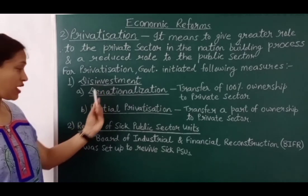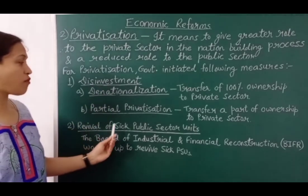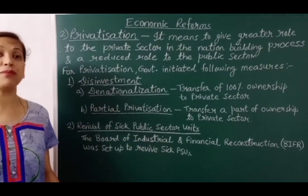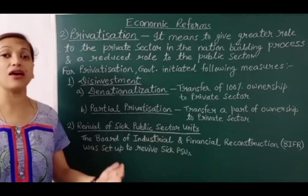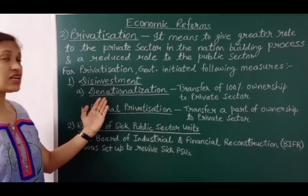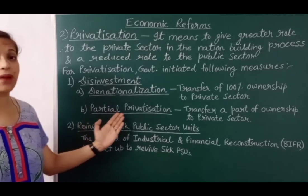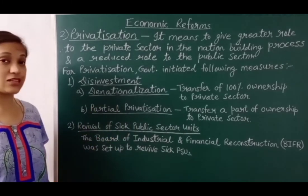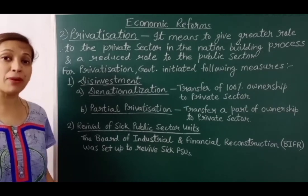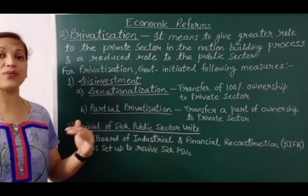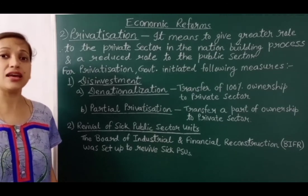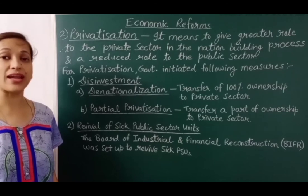The first step is disinvestment and the second is revival of sick public sector units. Disinvestment matlab vinivesh karna — business mein laga hua paisa wapas nikalna. Disinvestment ke doh tarike hain: first is denationalization and the second is partial privatization. Denationalization means government apni public asset ya government company ki hundred percent ownership private sector ko sale kar deti hai. For example, United Kingdom denationalized its railroads from 1994 to 1997.